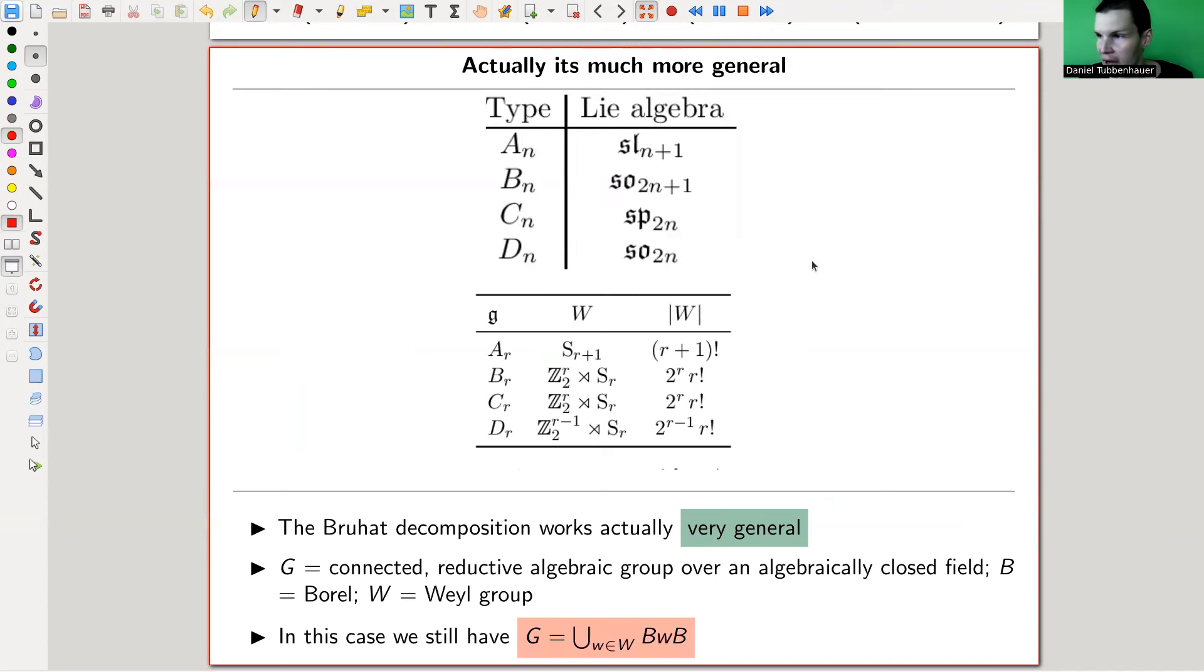But Bruhat just said that works very general. You can replace your Lie algebra by something else, by an SO, an SP, a symplectic group, or something. You get a slightly different thing in the middle, so the Weyl group will be—the symmetric group will be replaced by the Weyl group of the corresponding type, which in my example here is essentially just a symmetric group and the semi-direct product with some Z2. But anyway, the point is it works really, really general, and you still have this decomposition.